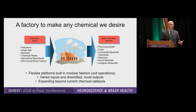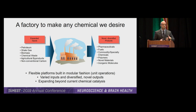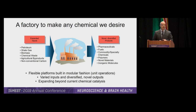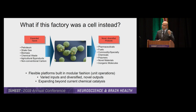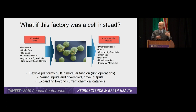We can create flexible platforms — this notion we call unit operations — expanding the types of carbon we're looking at and the ability to create new types of products. My viewpoint is very similar, except for one change: I asked what happens if this factory were a cell instead. What if we can actually internalize these chemical reactions into a cellular system such as a yeast, and use that as a factory to convert these resources into new types of products?